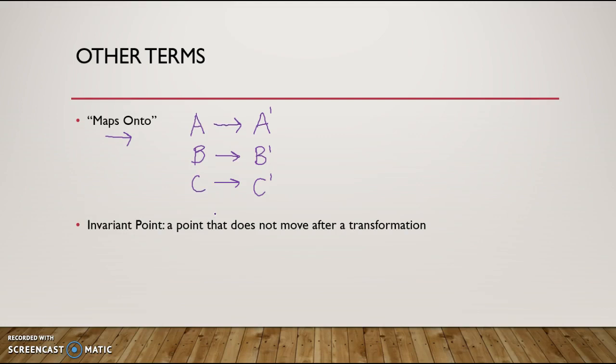And then another term is an invariant point. An invariant point is a point that does not move after a transformation. It stays the same. So whatever you start with, you try to transform it somehow, and just based on where that point is and what your transformation is, it stays the same—that's called an invariant point. Not every transformation you do will have one, and there are some transformations that will never have an invariant point, which we'll look at later in the unit. So an invariant point does not move after a transformation.